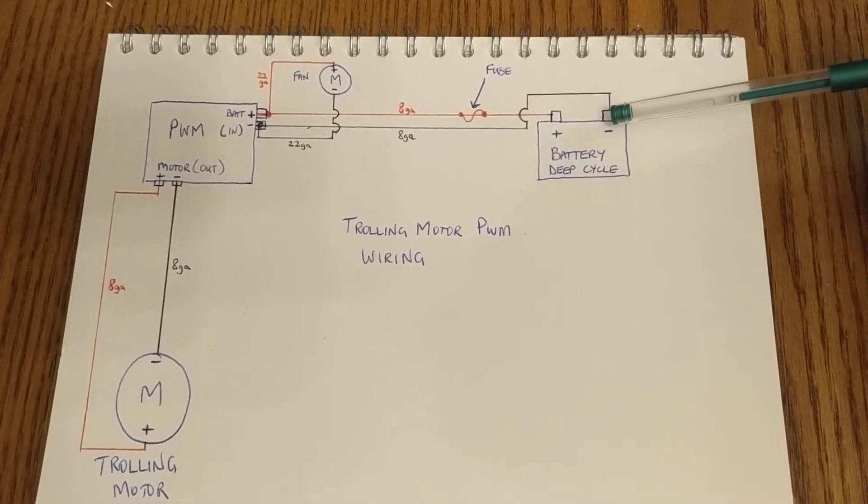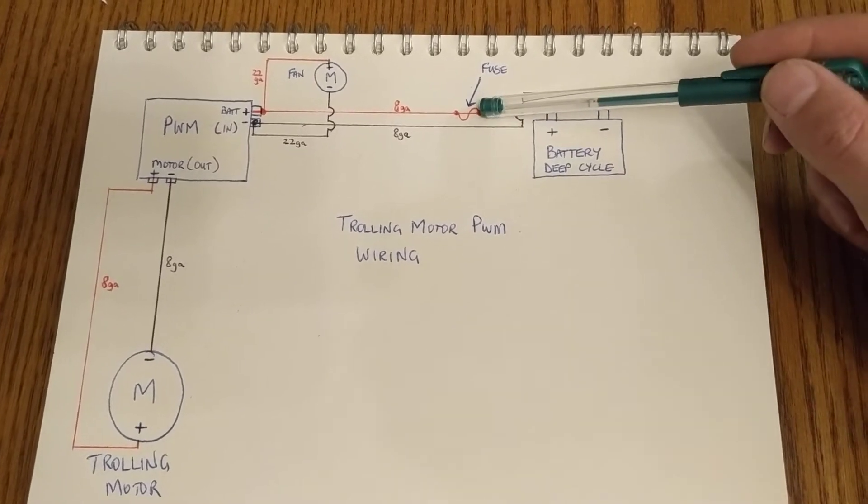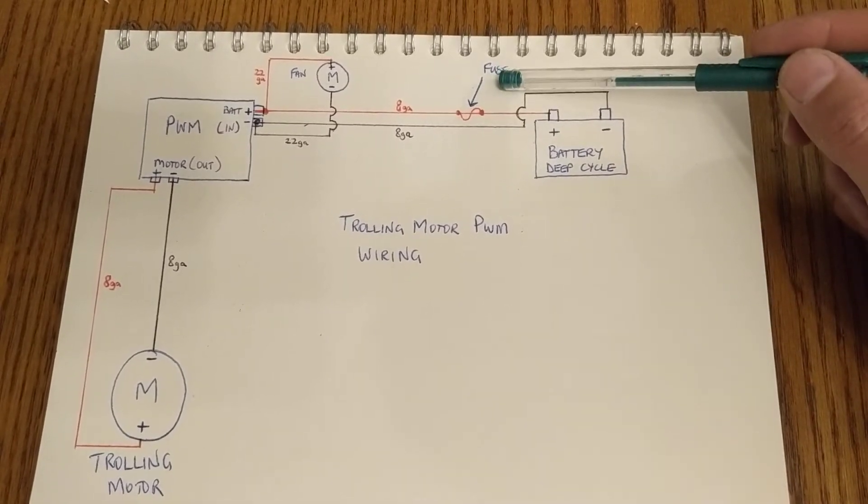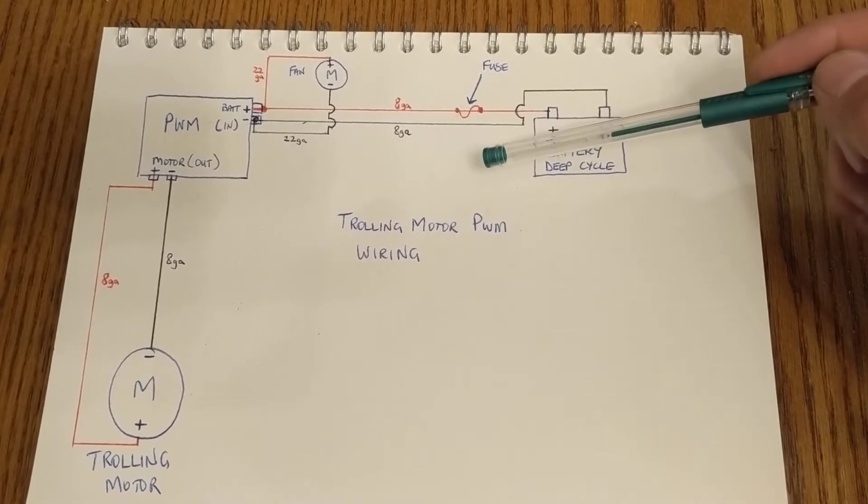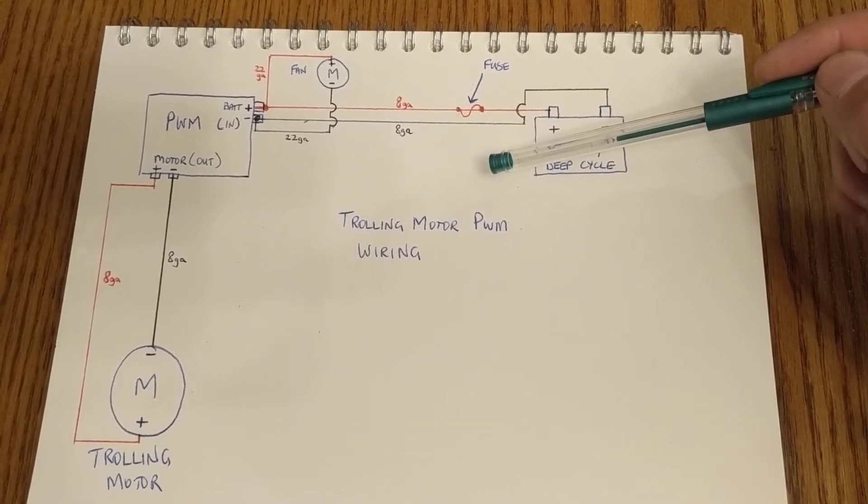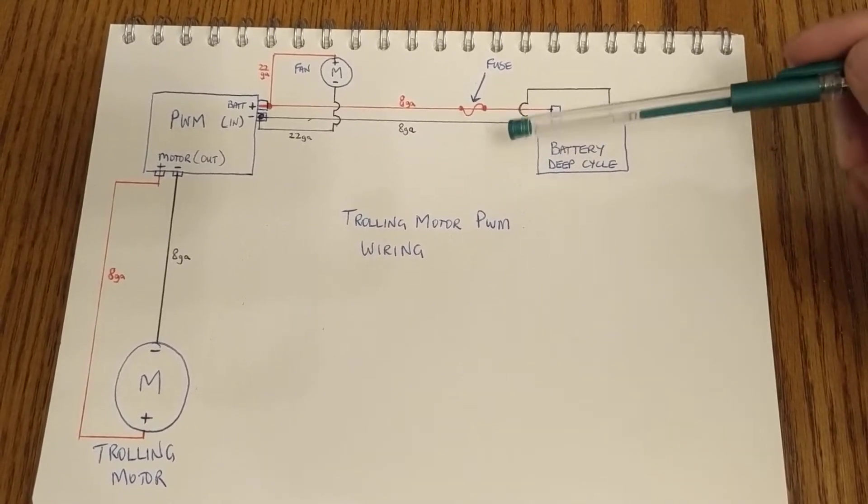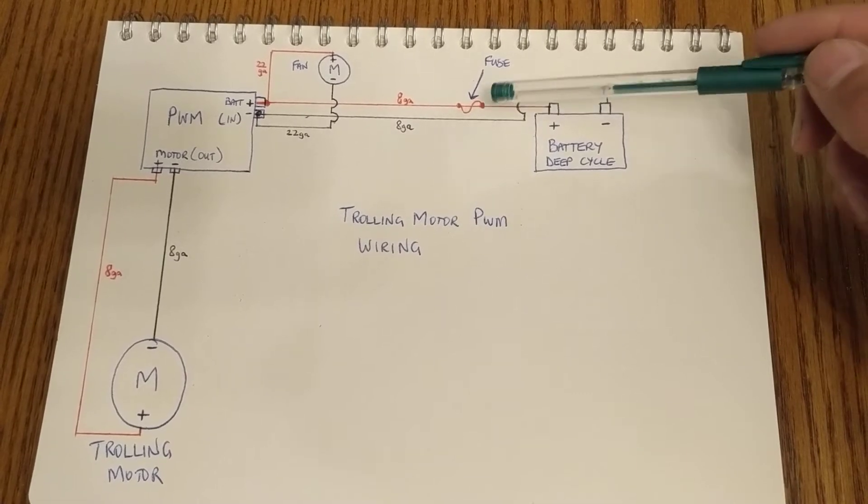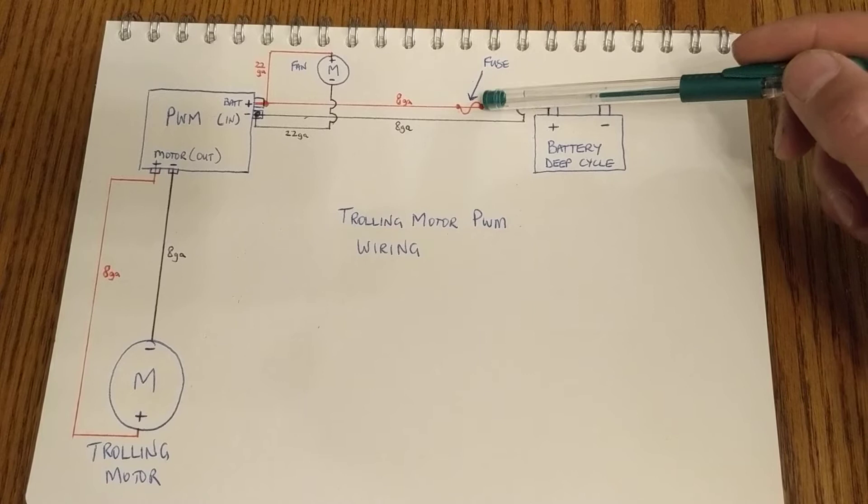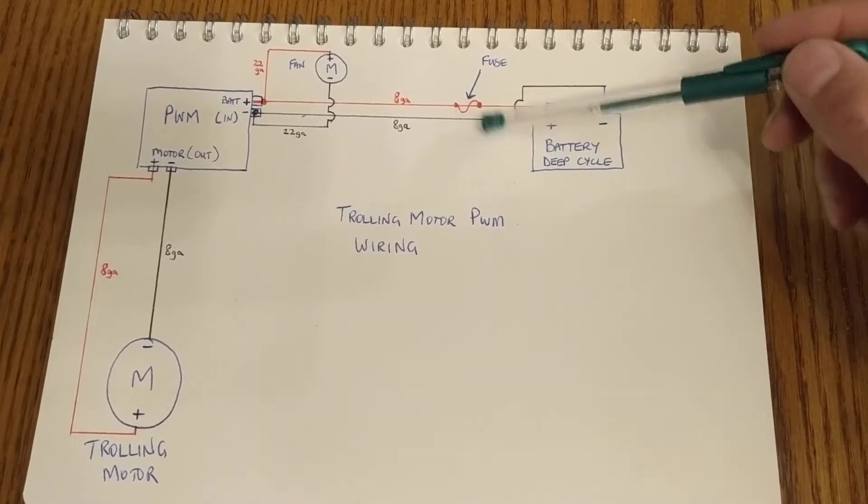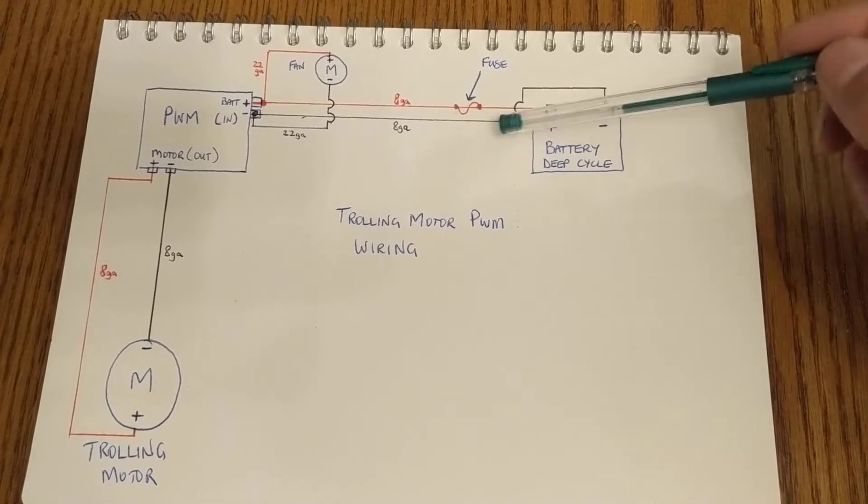So how I wired it up is I ran positive from the battery through a fuse. My fuse I believe is a 50 amp fuse. I'm using a 55 pound thrust trolling motor so peak it should be around 55 amps. I haven't blown this yet. I've had it wide open for probably five or six minutes at a time and I've never blown that fuse, but you will have to put the fuse in there according to the size of your trolling motor.